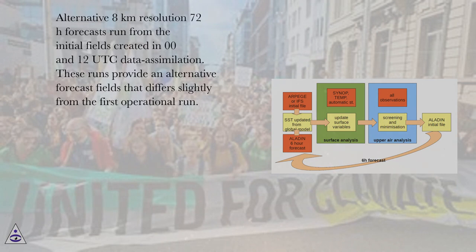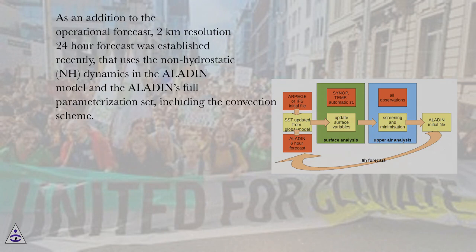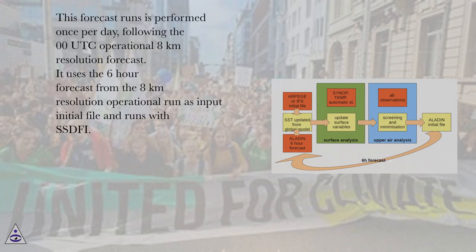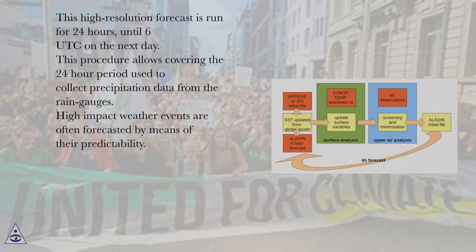These runs provide alternative forecast fields that differ slightly from the first operational run. In addition to the operational forecast, a 2 km resolution 24-hour forecast was established recently, using non-hydrostatic (NH) dynamics in the ALADIN model with ALADIN's full parameterization set, including the convection scheme. This forecast run is performed once per day, following the 00 UTC operational 8 km resolution forecast. It uses the 6-hour forecast from the 8 km resolution operational run as the initial input file. This high-resolution forecast runs for 24 hours, until 06 UTC the next day, allowing coverage of the 24-hour period used to collect precipitation data from rain gauges.